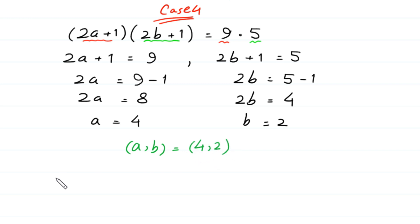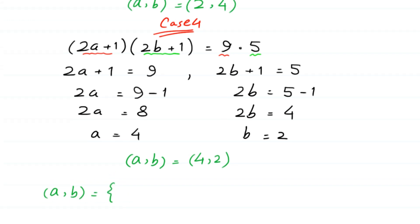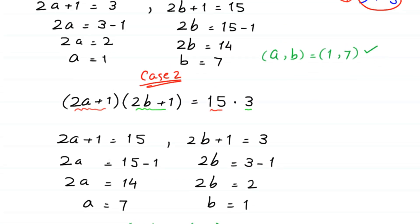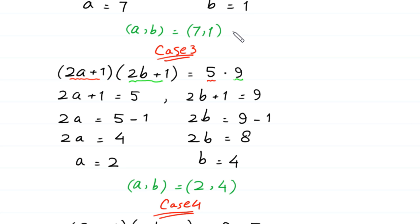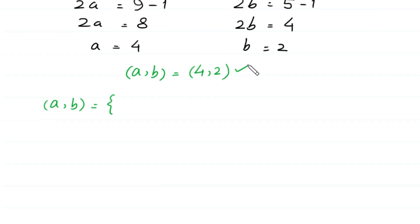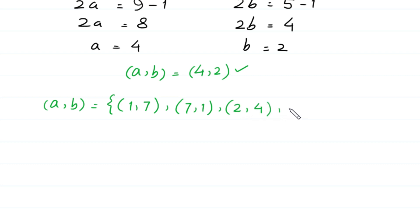So the solution set of (a, b) is: (1, 7), (7, 1), (2, 4), and (4, 2). This is the final answer.